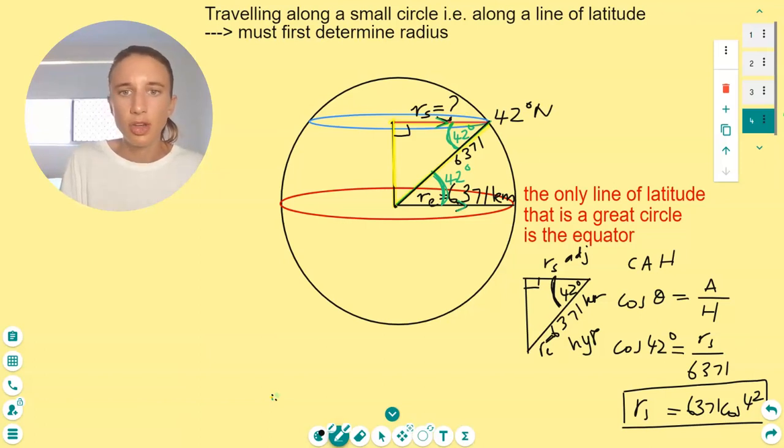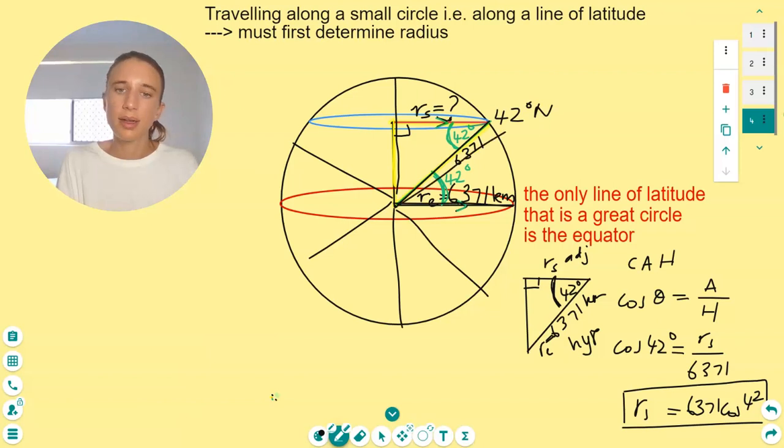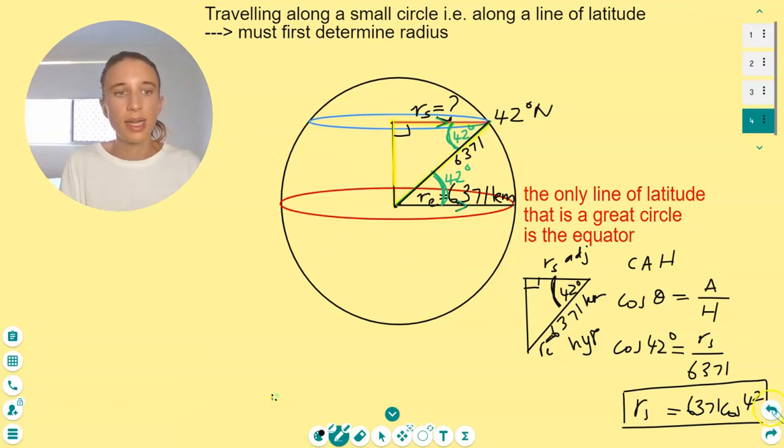Remember that you have a side length of that right angle triangle because the radius of earth is the same all the way there. Okay. And I hope that that made sense. And if not, just let me know. All right. See ya.